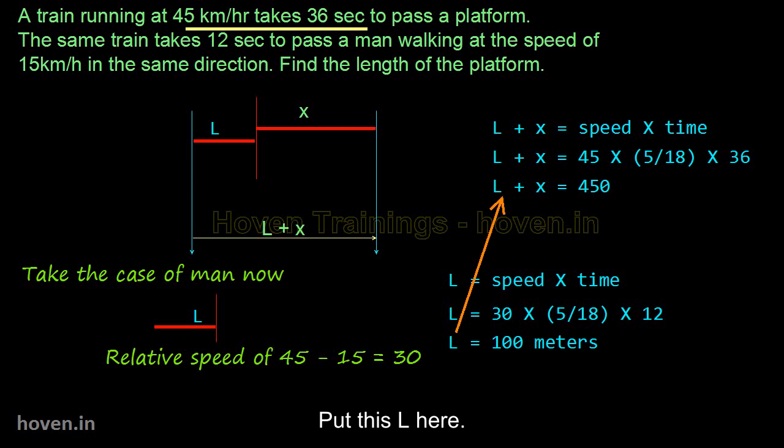Put this L here. We get x equal to 450 minus 100 equal to 350 meters. That's the solution.